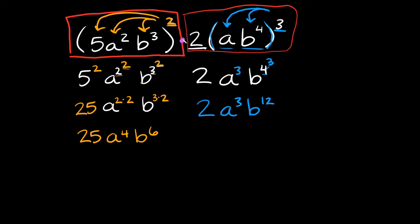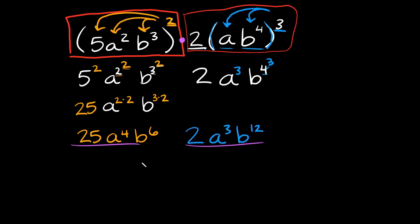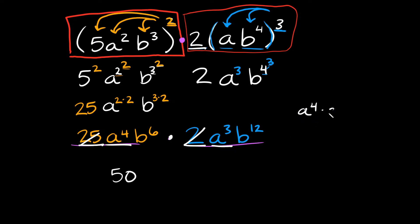Remember, we're multiplying these two things together. In order to do that, we need to combine like terms. Let's start with the numbers — we have 25 and we have 2. 25 times 2 equals 50, so we're done with the numbers. Now let's move on to the a term. We have a to the fourth times a to the third.